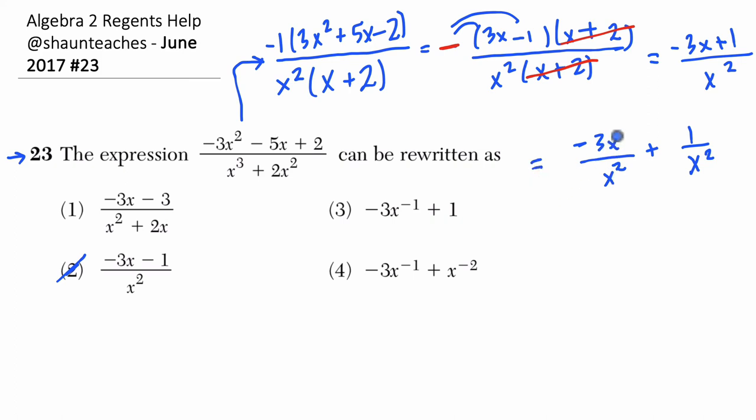And, x over x squared, this x cancels with this exponent to 1. We have negative 3 over x plus 1 over x squared. And, our laws of exponents tell us that, essentially, if we have 1 over x, that equals x to the negative first. So, here's our 1 over x.